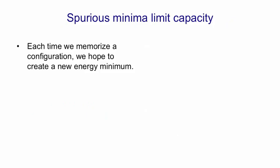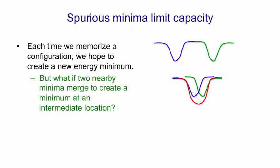If we ask what limits the capacity of a Hopfield net, what causes it to break down, it's merging of energy minima. Each time we memorise a binary configuration, we hope to create a new energy minimum. We might have our state space depicted horizontally and the energy depicted vertically, with one energy minimum for the blue pattern and another for the green pattern. But if those two patterns are nearby, we won't get two separate minima — they'll merge to create one minimum at an intermediate location, and that means we can't distinguish those two separate memories. We'll recall something that's a blend of them rather than the individual memories. That's what limits the capacity of a Hopfield net.